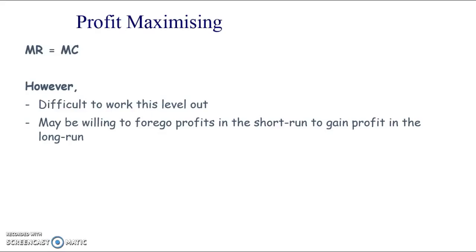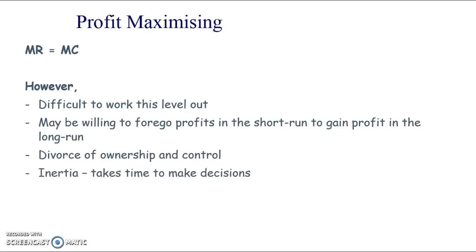Firms might also not produce at the profit-maximizing point because they're willing to forgo short-run profits to gain long-run profits — for example, to gain market share. There's also the divorce of ownership and control, where the owner of a firm is not necessarily running it, and the person controlling it may have different objectives.